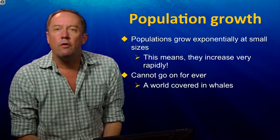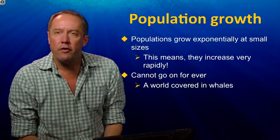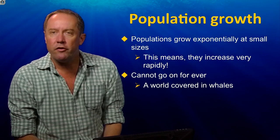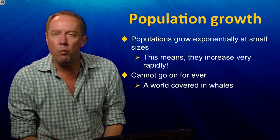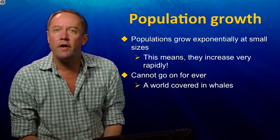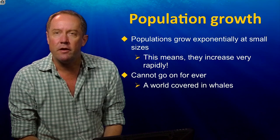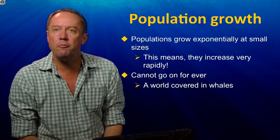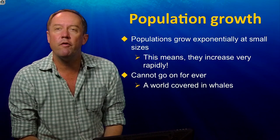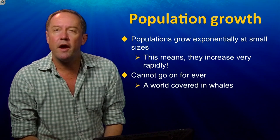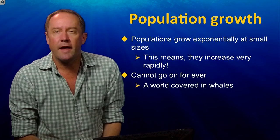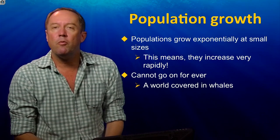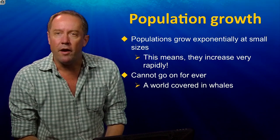All species have population growth curves. Initially, when populations are very small — well below their carrying capacity — they increase rapidly. The per capita growth rate is high. As the population grows, however, the growth rate declines. They can't grow exponentially forever; otherwise the sea would be full of whales.